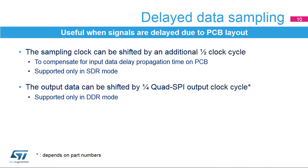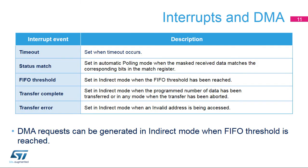Delayed data sampling allows users to compensate for the delay of signals due to constraints on the PCB layout optimization. It allows applications to shift the data sampling time by an additional one-half clock cycle when operating in SDR mode. In DDR mode, the output data can be shifted by a one-half system clock cycle to relax hold constraints.